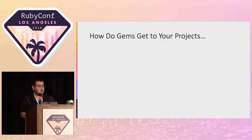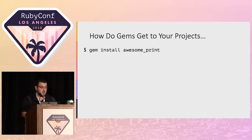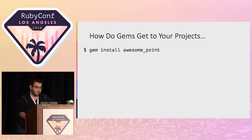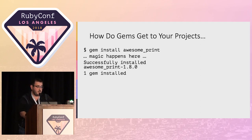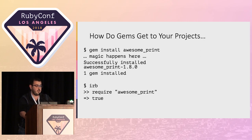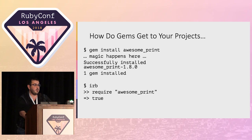So let's start with what we know. We know how to install gems. We know how to use gems. You can install a gem with gem install — we'll use awesome_print as an example. Voodoo happens, gem's installed. Hop into IRB, require the gem, and suddenly you have the gem loaded and you can do whatever you want with it.